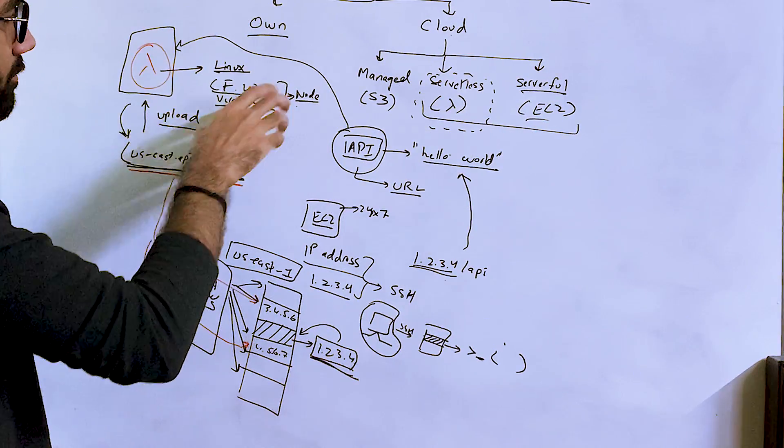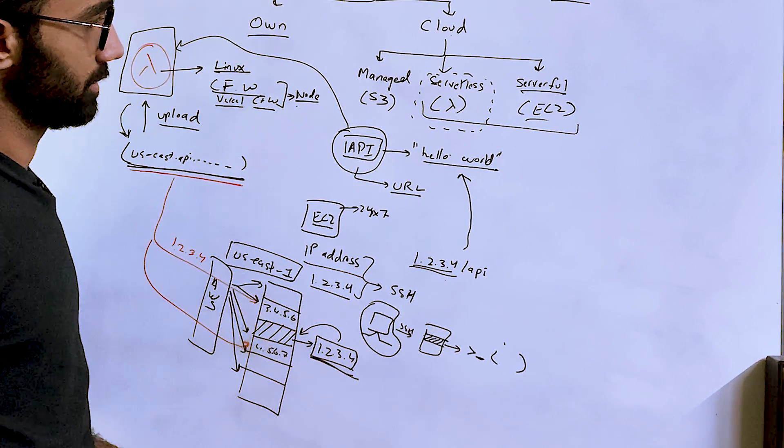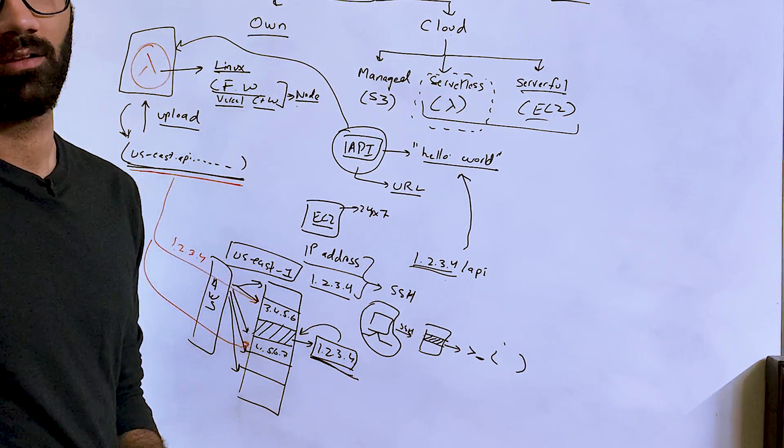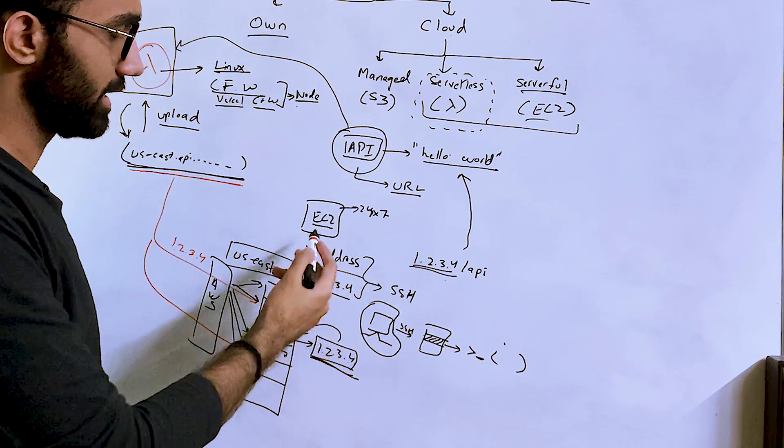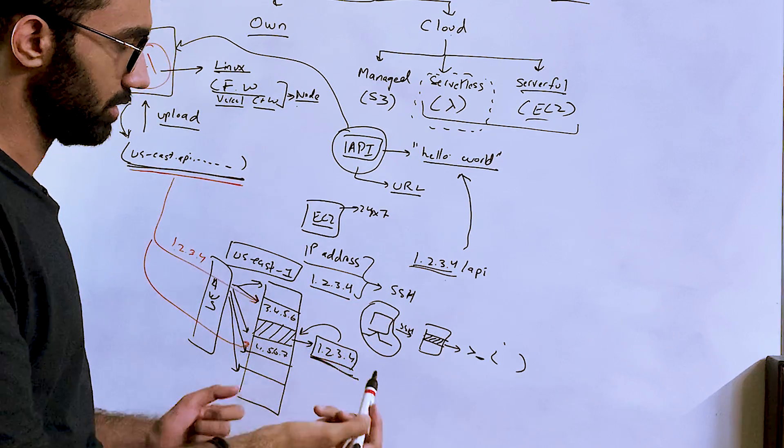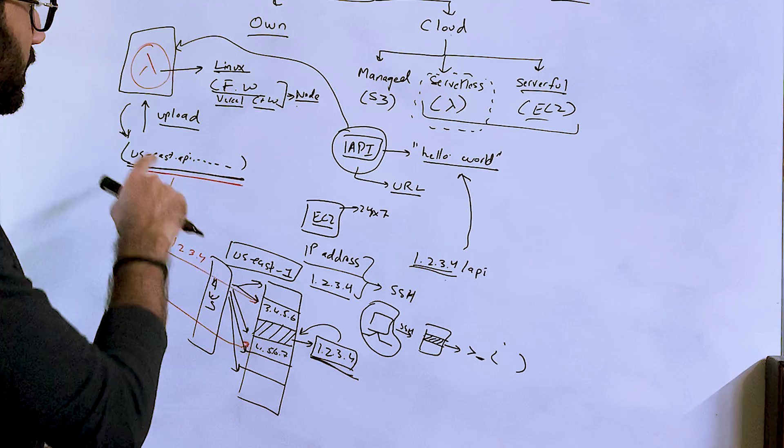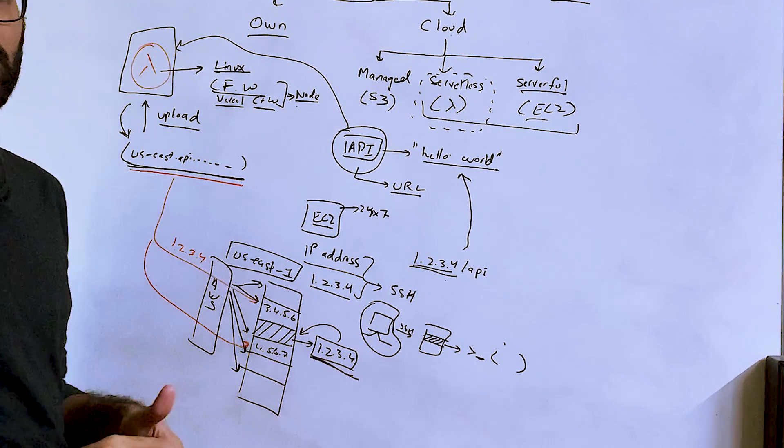Now, you might be thinking that when Lambda actually executes and provisions all this infrastructure, we might be losing a lot of time in the provisioning part compared to the EC2 part, because here we already have the infrastructure with us. The app is already running, ready to respond and so on. And that is true. If you're thinking about that in this way, that is 100% true.